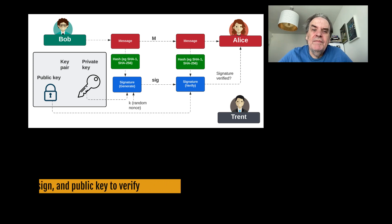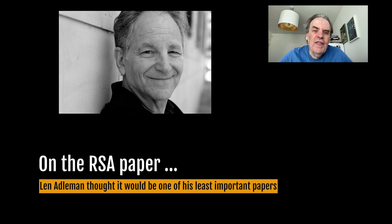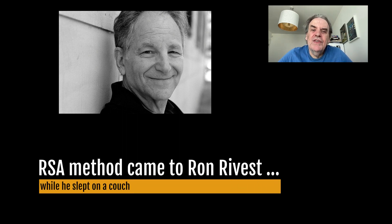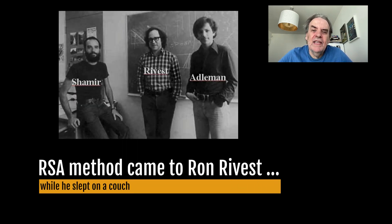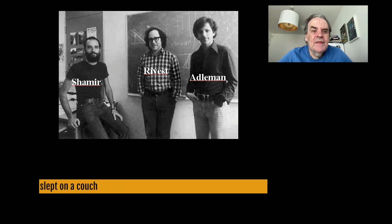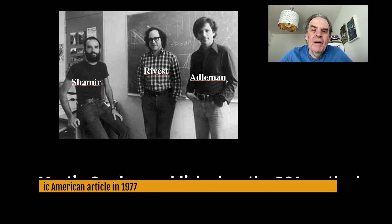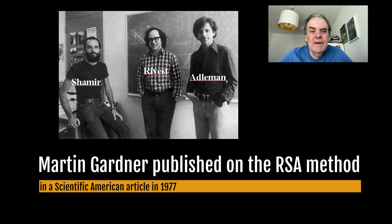Len Adleman, the A in the RSA method, thought that the RSA paper would be one of the least significant papers he would ever publish — he was wrong. The RSA method came to Ron Rivest while he slept on a couch. Martin Gardner published information on the RSA method in his Scientific American article. Initially there were 4,000 requests for the paper, which rose to 7,000, and it took until December 1977 for them to be posted.